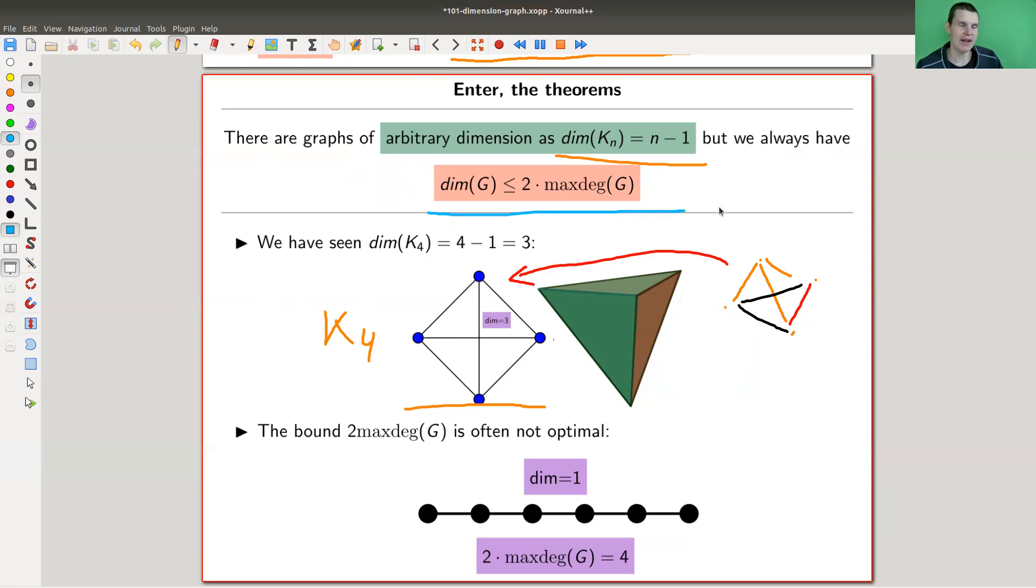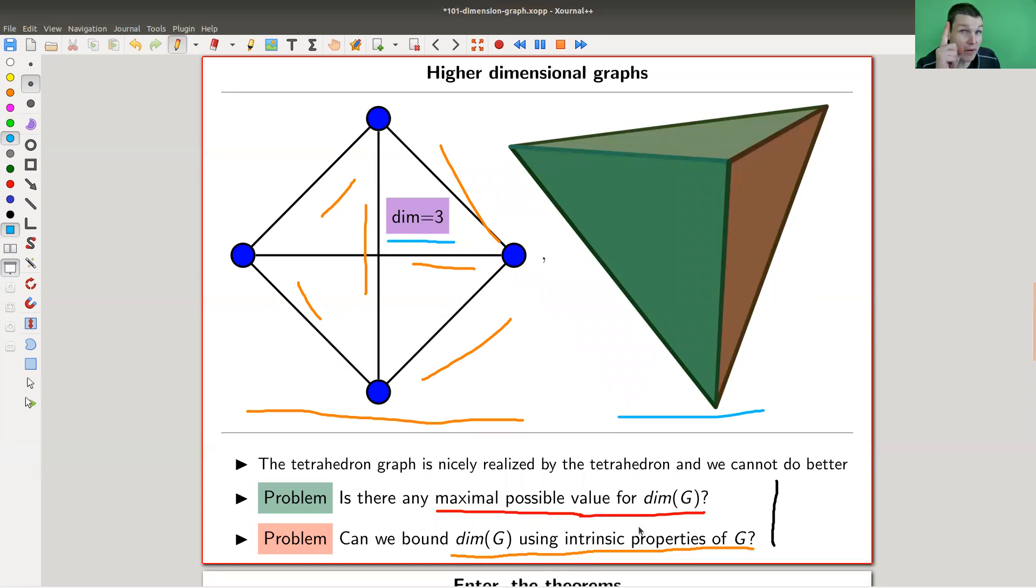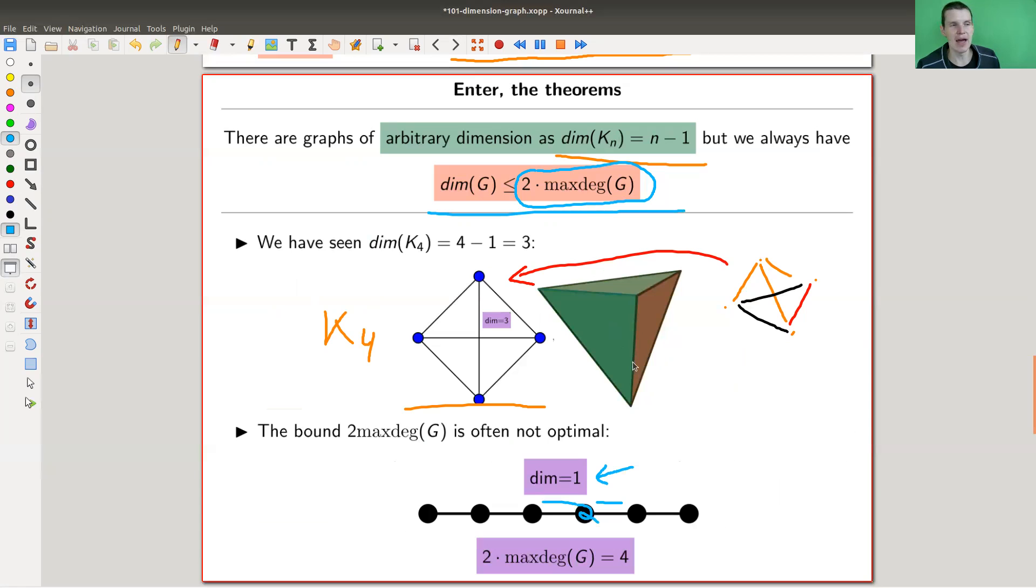And then the other one is actually very impressive. You can bound the maximal dimension by something really just intrinsic and easy to count, namely the max degree of the graph, you just need to add a factor two. So two times the max degree is always an upper bound for the dimension of the graph. It's not a really good one. So this one here is of dimension one, the maximal degree here is two, so two times the max degree is four. One is quite smaller than four, but that's not the point. The point is, it's a bound that works for any graph, and it's ridiculously simple to check. You don't need to think about any embeddings or nice realizations, just count the max degree.